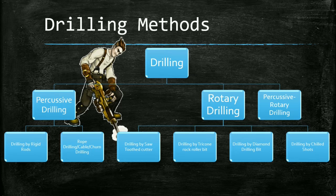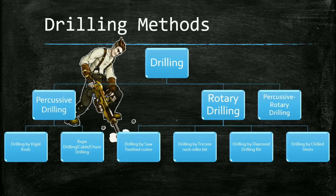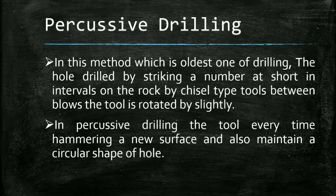Percussive drilling is the oldest drilling method. In this method, the hole is drilled by striking a chisel-type tool at intervals on the rope. Between the blows, the tool is rotated slightly. In percussive drilling, the tool hammers a new surface each time and also maintains the circular shape of the hole.